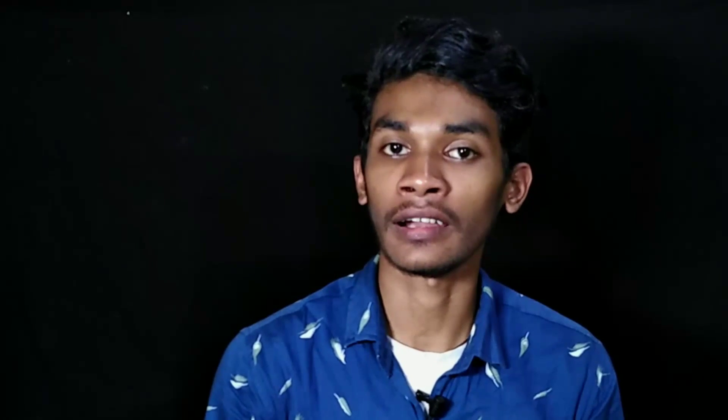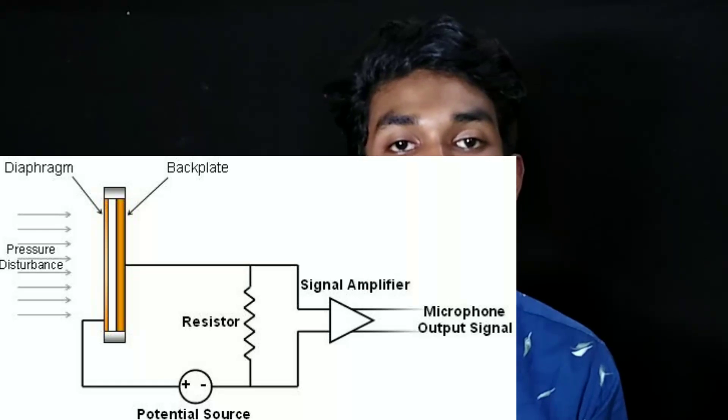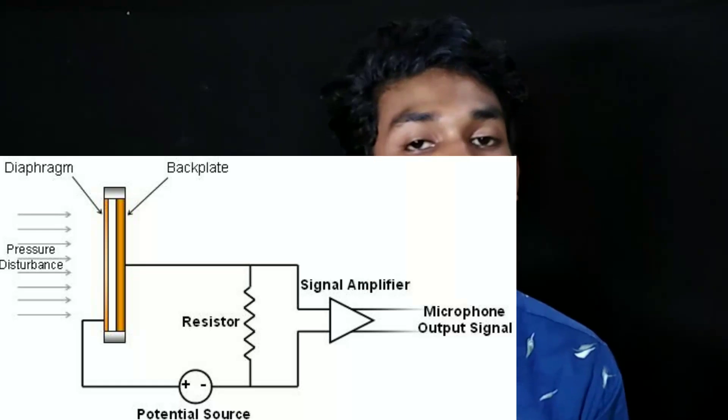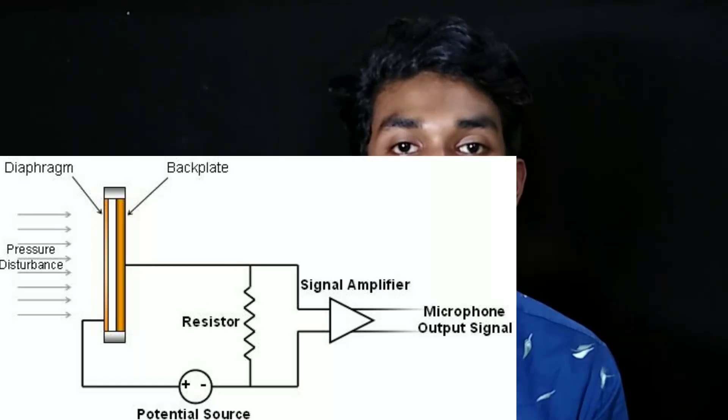Now we are going to talk about condenser microphones. The condenser microphone is a directional microphone. The key components of a condenser microphone are the diaphragm and backplate, which make up the diaphragm case.